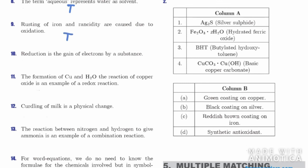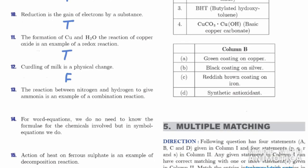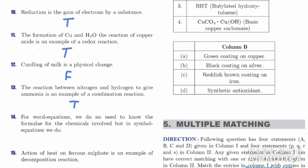Tenth: reduction is the gain of electrons by a substance — True. Eleventh: the reaction of copper oxide with hydrogen to form copper and water is an example of a redox reaction — True, because it involves both reduction and oxidation. Twelfth: curdling of milk is a physical change — False. Thirteenth: the reaction of nitrogen and hydrogen to give ammonia is an example of a combination reaction — True. Fourteenth: for word equations we need to know the formula, but not for symbol equations — True. Fifteenth: the action of heat on ferrous sulfate is an example of a decomposition reaction — True.